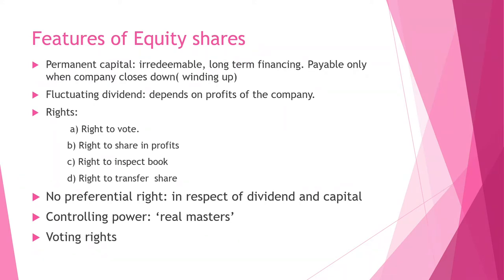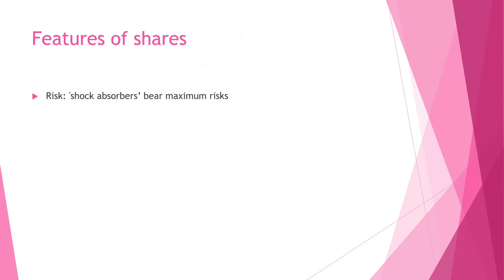Equity shareholders have voting rights — they can vote at the annual general meetings by various methods of voting. Risk — equity shareholders are known as the shock absorbers because they bear the maximum risk. When the company does not earn enough profits, these shareholders get marginal dividend. Whenever the company is going through any problems, these shareholders remain with the company and bear the maximum risk it faces.